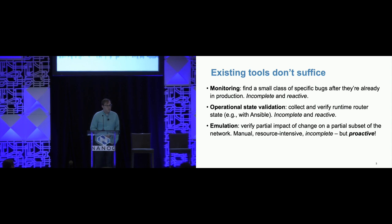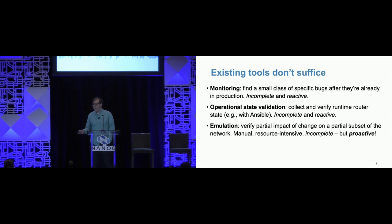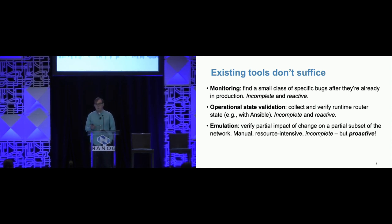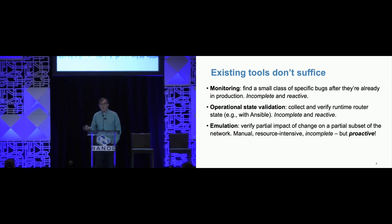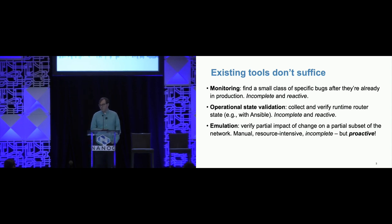There's operational state validation, where you collect and verify router runtime state, maybe using Ansible to log into all the devices. Again, this is incomplete because you're only able to verify certain properties, and it's reactive because anything you find from runtime state validation is already affecting your network. There are more proactive approaches — you can emulate a change by deploying it on a partial subset of your network spun up in VMs. But this is manual, resource intensive, and incomplete because you're limited to the part of the network you can spin up and the properties you're willing to check.